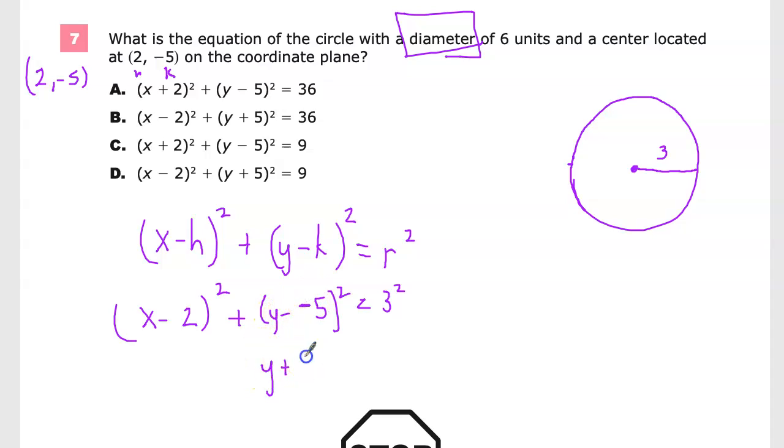We'll go ahead and square 3 squared equals 9. So you end up with (x - 2)² + (y + 5)² = 9. So these are out just because of that. And then right here. So the answer to number 7 is D.